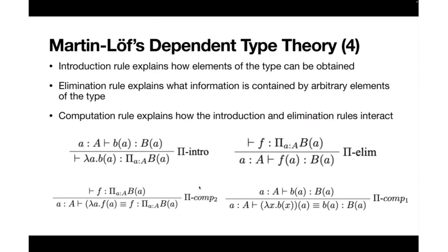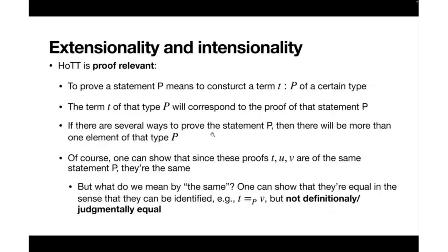All types must respect judgmental equality. Now, philosophically, homotopy type theory is proof-relevant, and proofs play an important role here because of the Curry-Howard correspondence: we consider propositions as types. A term T of type P says that there is a proof T of the proposition P.